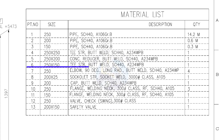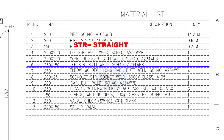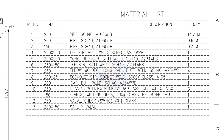Item number 6: 250 into 150 straight T, butt welded, schedule 40. Quantity: 1. Item number 7: 250 NB, 90-degree long radius elbow, butt welded type, schedule 40. Quantity: 1.